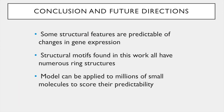In conclusion, this work was able to demonstrate that there are structural features that are able to be represented as chemical fingerprints that are predictive of changes in gene expression. In fact, the structural motifs found in this work suggested that the most predictable structures have numerous ring structures. The model generated by this project can be applied to millions of small molecules to assess their predictability, which can be used to better prioritize small molecules for further analysis.